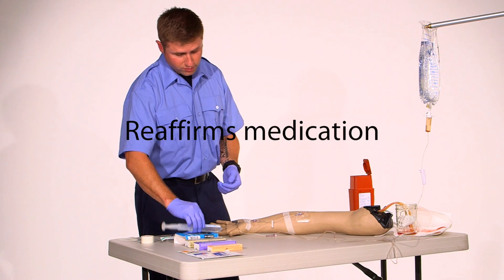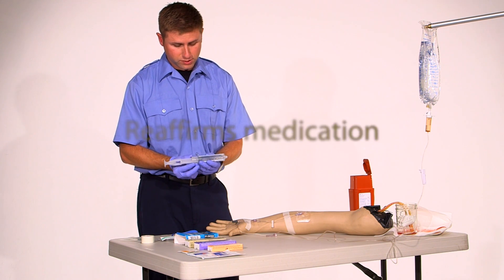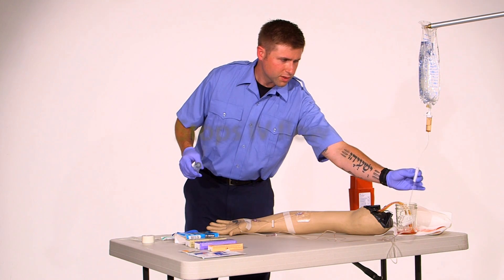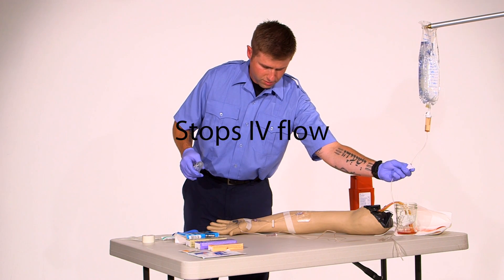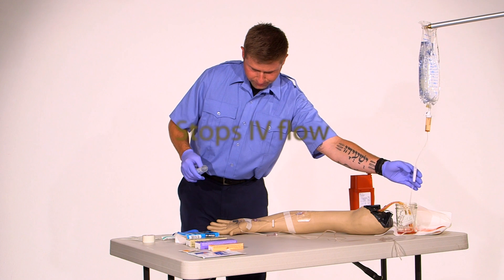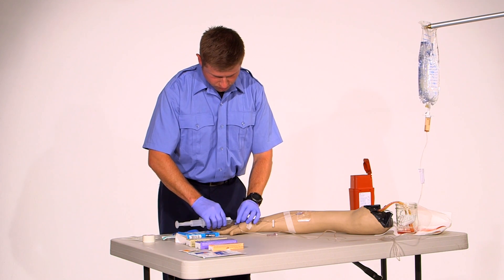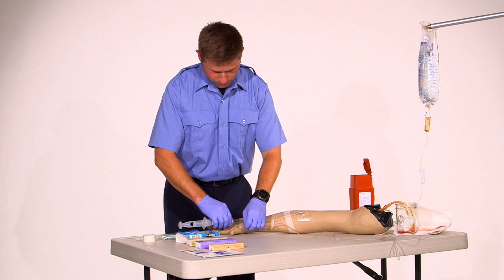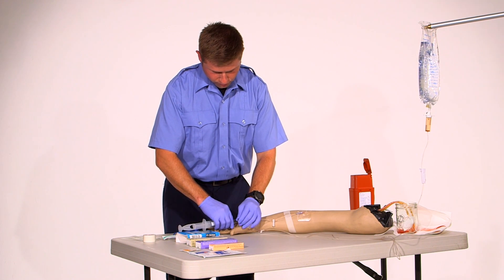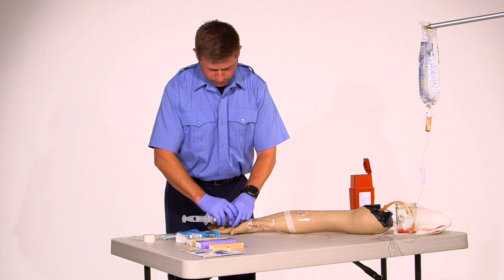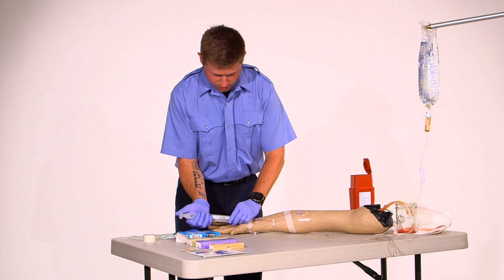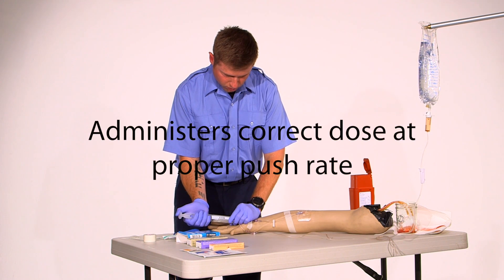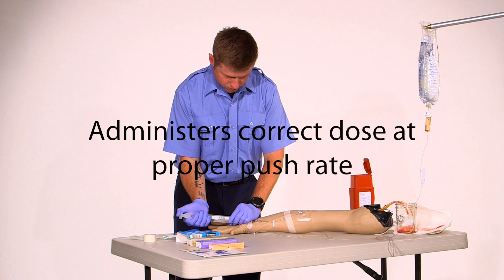Once again I'm going to affirm that this is 50% dextrose and I am going to stop the IV line. I'm going to connect the dextrose to the line. Before I push I'm going to occlude the line so I don't push any up into the saline bag. And at this time I will slowly push the dextrose.